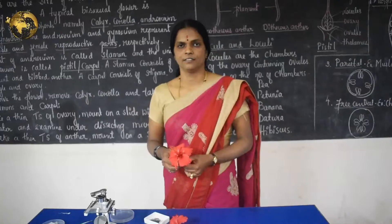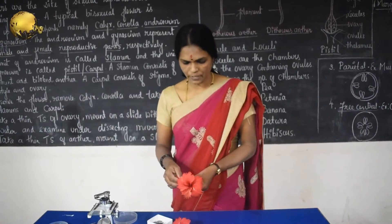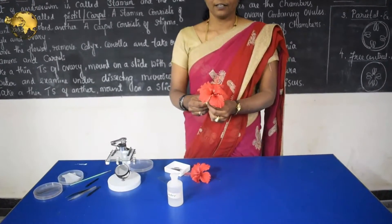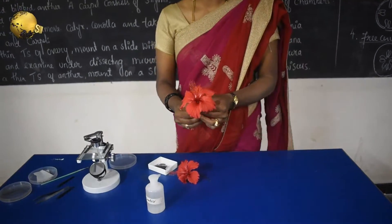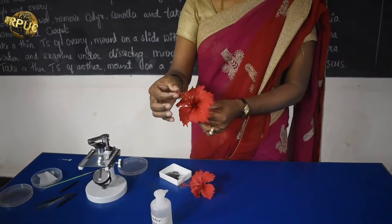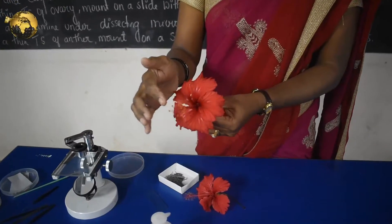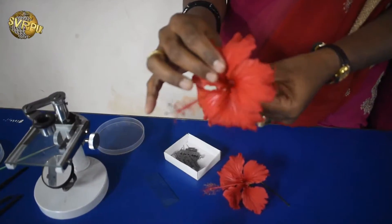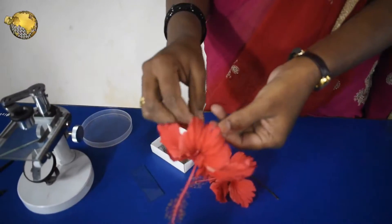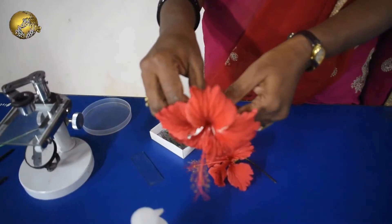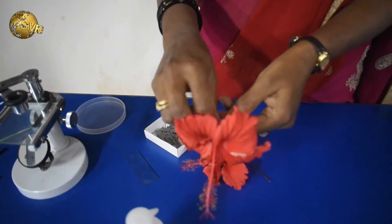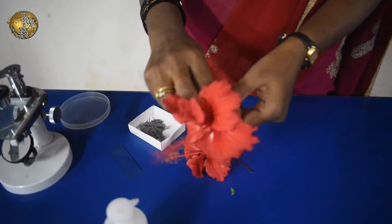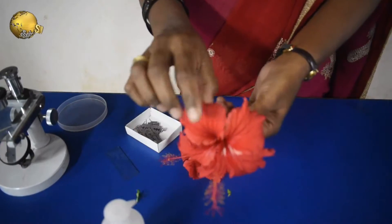Another example is Sunflower. Coming to the experimental part — this is the hibiscus flower. As described, in the pistil, the pentafid stigma is visible. These are the stamens that are present. To take the section, remove the calyx carefully, then remove the petals.